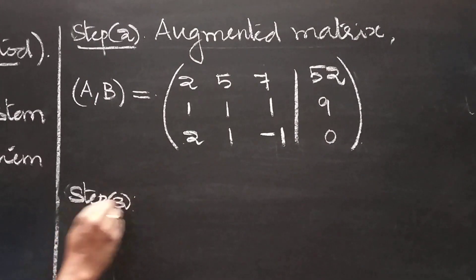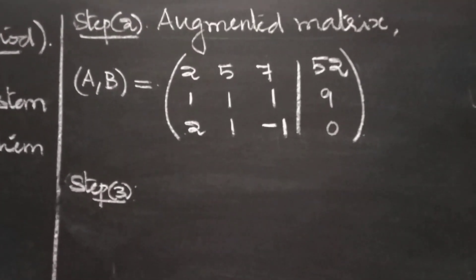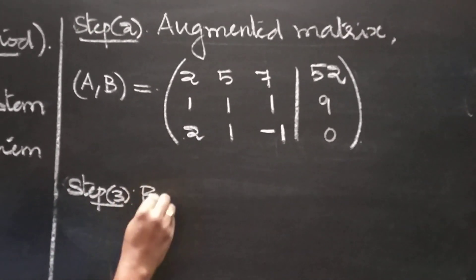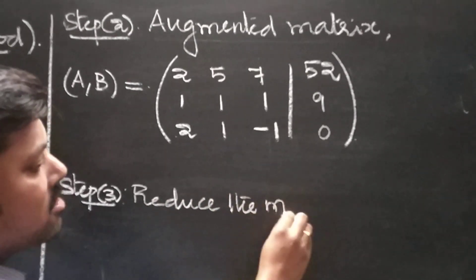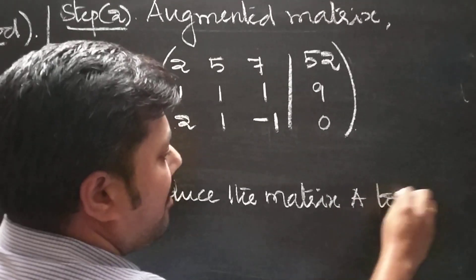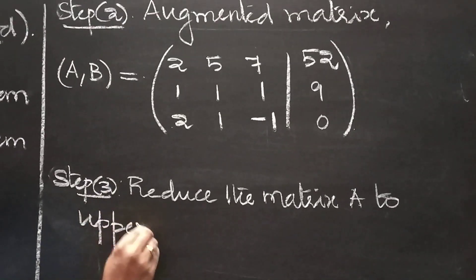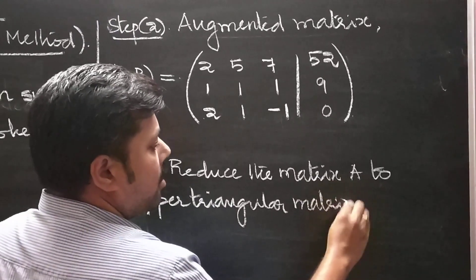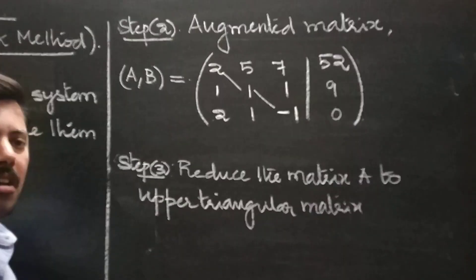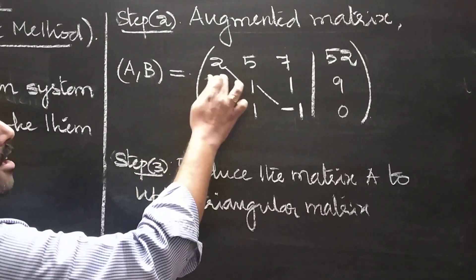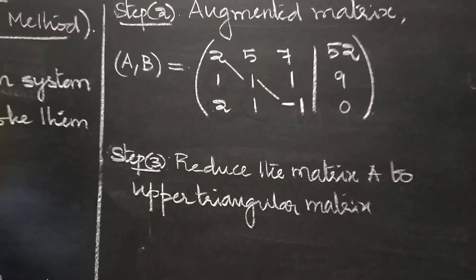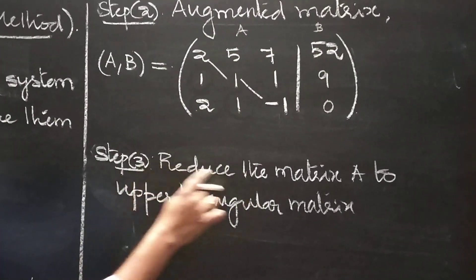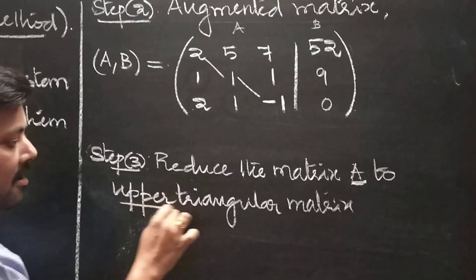Our aim is to reduce the matrix A to an upper triangular matrix. An upper triangular matrix means making all elements below the diagonal equal to 0 — that is, make elements A21, A31, and A32 equal to 0.